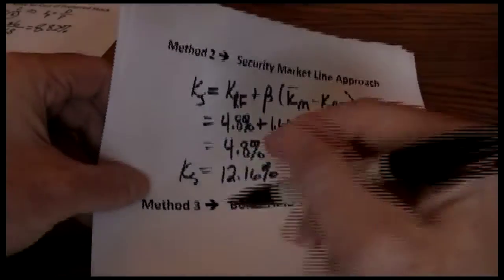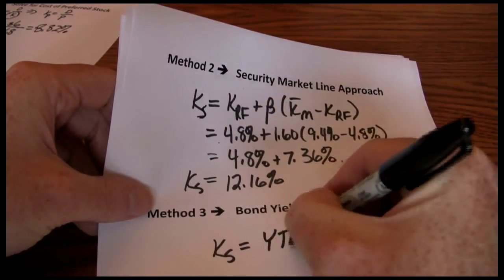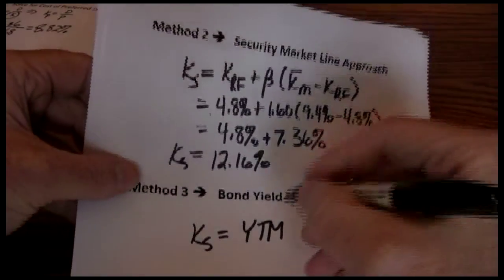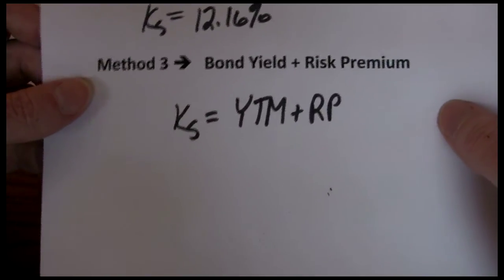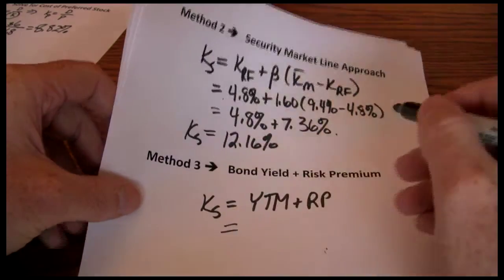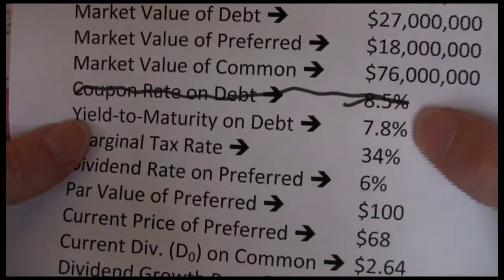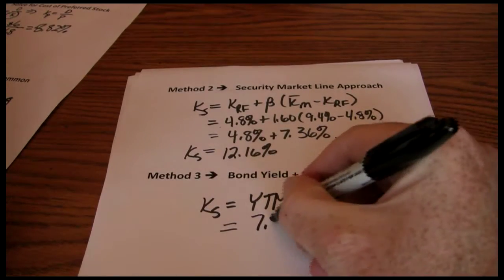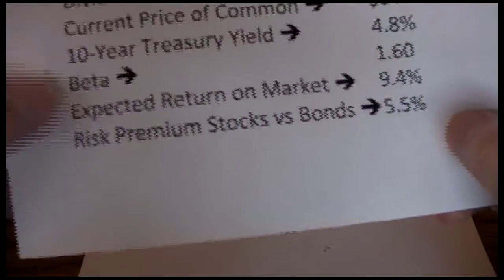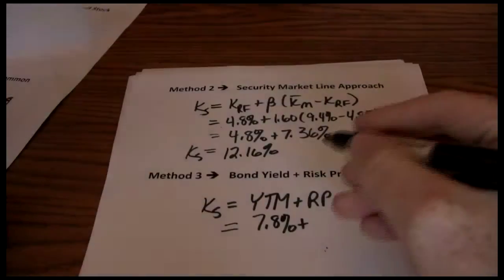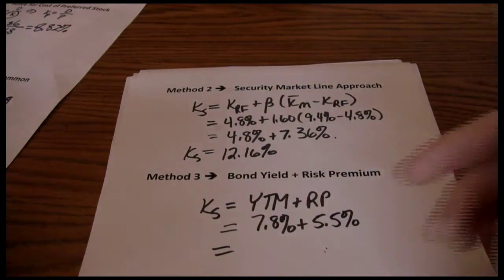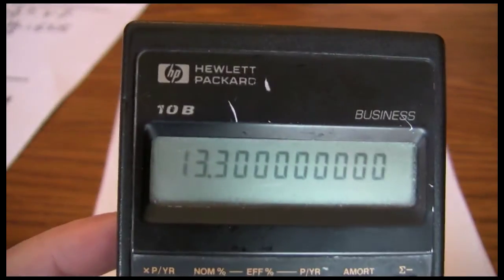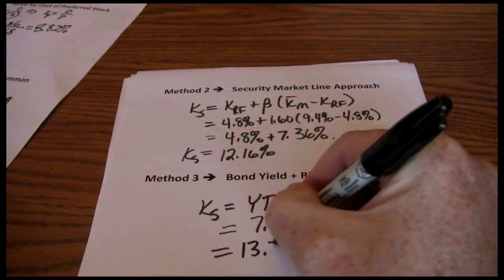So therefore combine those two ideas and we know that our stockholders want a higher rate of return than our bondholders. Our bondholders are going to get the yield to maturity. So that's their rate of return. And we just add in a risk premium to reflect the idea that stockholders want a higher rate of return than bondholders. So the yield to maturity was given as 7.8%. Our risk premium is given as 5.5%. Stockholders want to earn at least 5.5% more than bondholders. So we just add those two numbers together. 7.8 plus 5.5 and we get 13.3% as our required return.